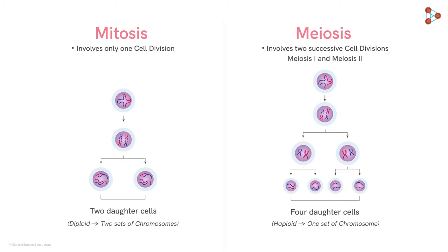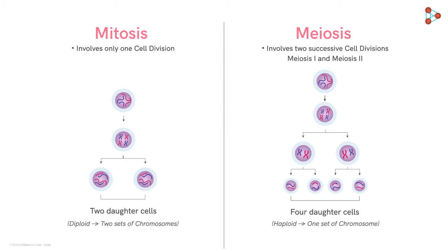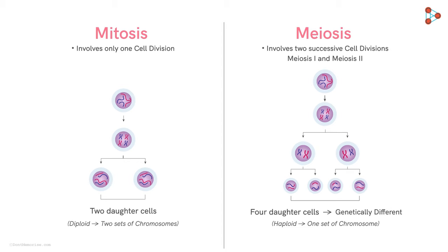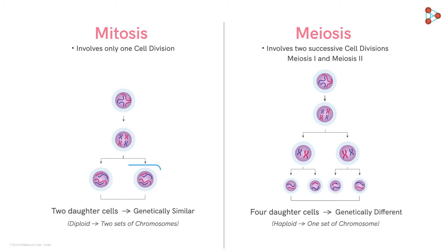This difference also gives a clue about one more distinction between the two. All four daughter cells produced by meiosis are genetically different from each other, while the two daughter cells produced by mitosis are genetically similar to each other.